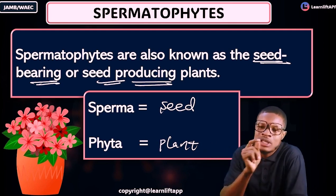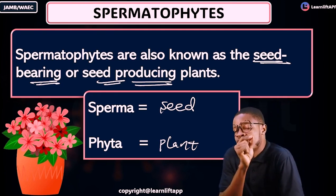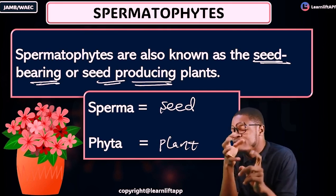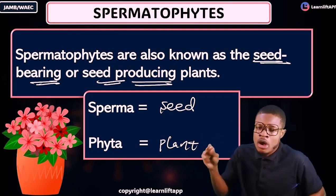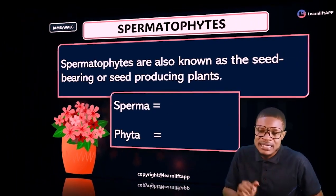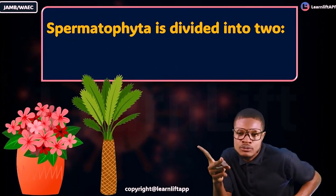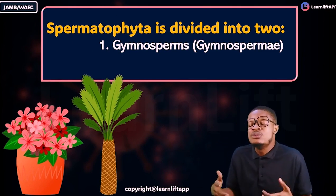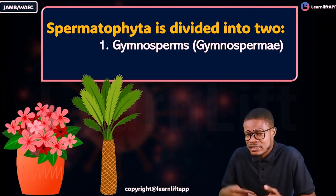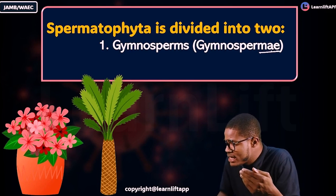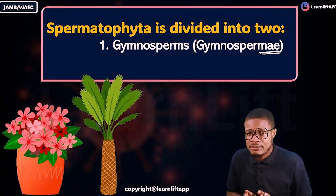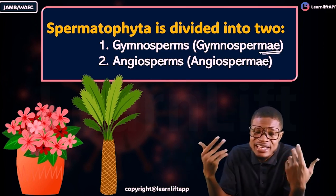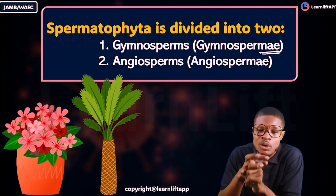Spermatophytes are the seed-bearing or seed-producing plants, gotten from two words: sperma meaning seed and phyte meaning plant. Spermatophyta is divided into two: number one is the gymnosperms, also called Gymnospermiae, and number two is the angiosperms, also called Angiospermiae.